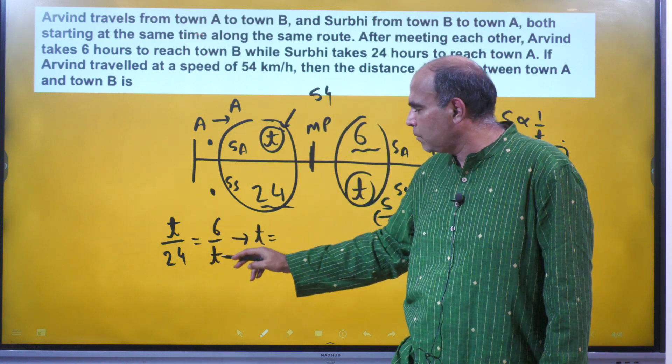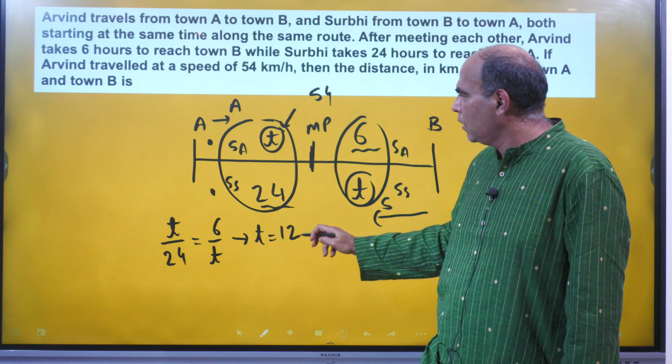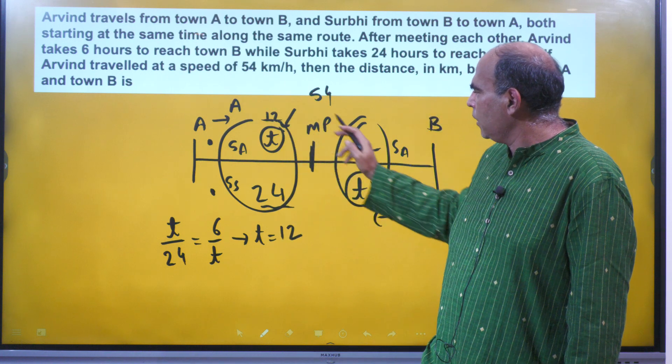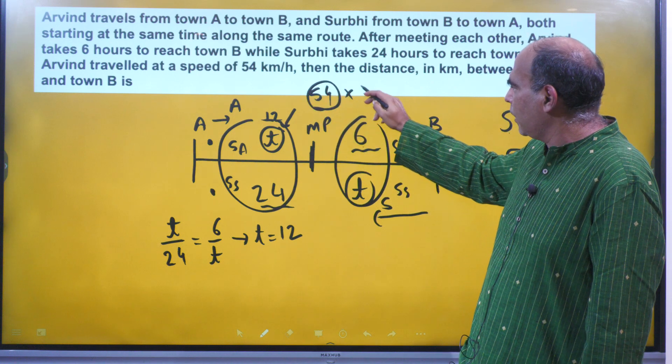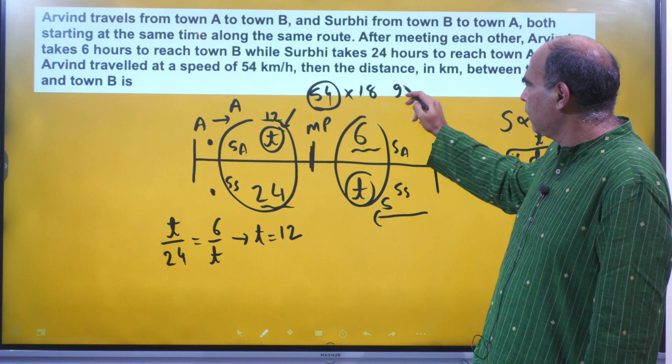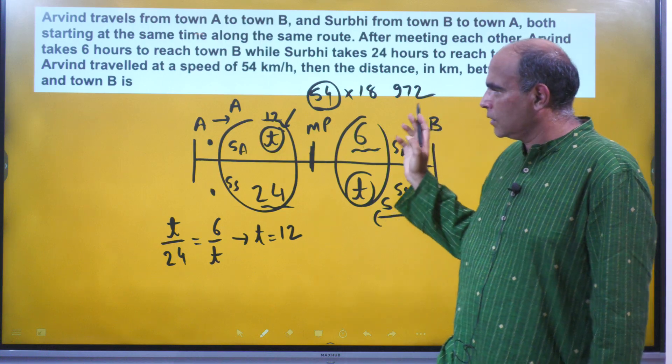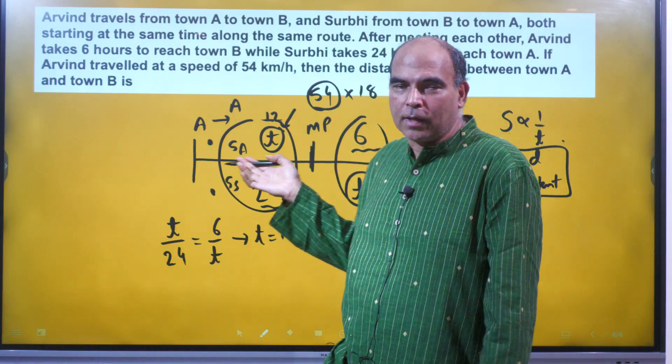T 12 mil gaya, to 18 ghante hoge - 6 ghante aur 12 ghante. 54 speed pe 18 ghante agar chalo ge to 972 answer aega. That's the answer to the question, and this is the answer that gave you 3 marks in the CAT. Do follow for more, thank you so much!